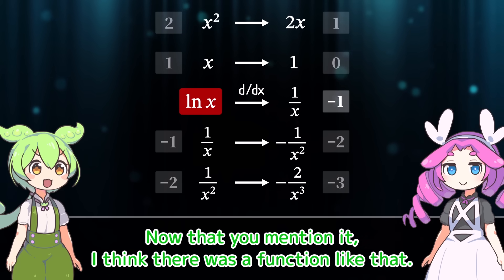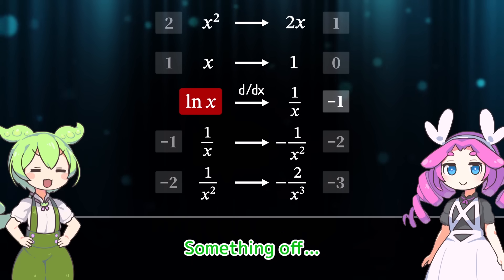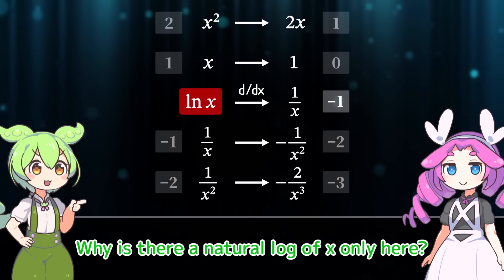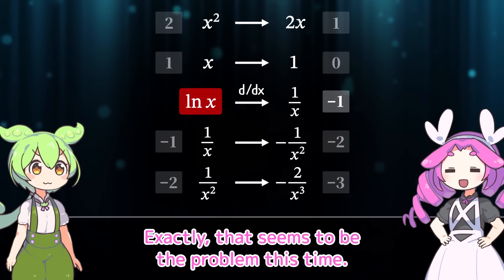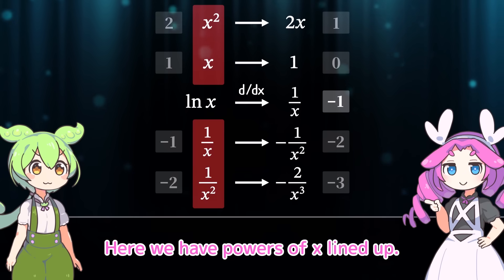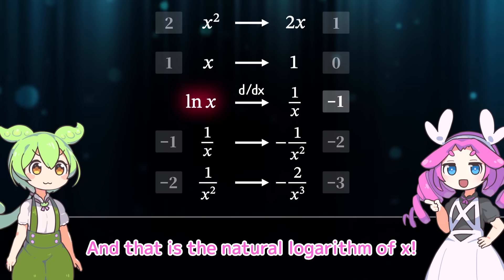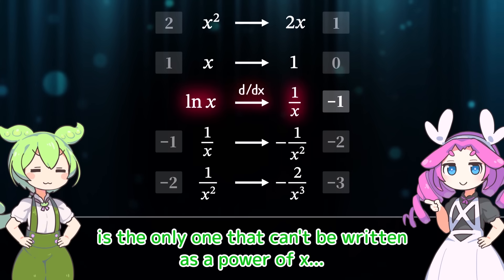Now that you mention it, I think there was a function like that. By the way, do you feel something is off? Something off. Yeah, I do feel something is strange. Why is there a natural log of x only here? It feels like it's the only one that doesn't fit in. Exactly. That seems to be the problem this time. Here we have powers of x lined up. But there's one exception. And that is the natural logarithm of x. The function whose derivative is 1 over x is the only one that can't be written as a power of x.